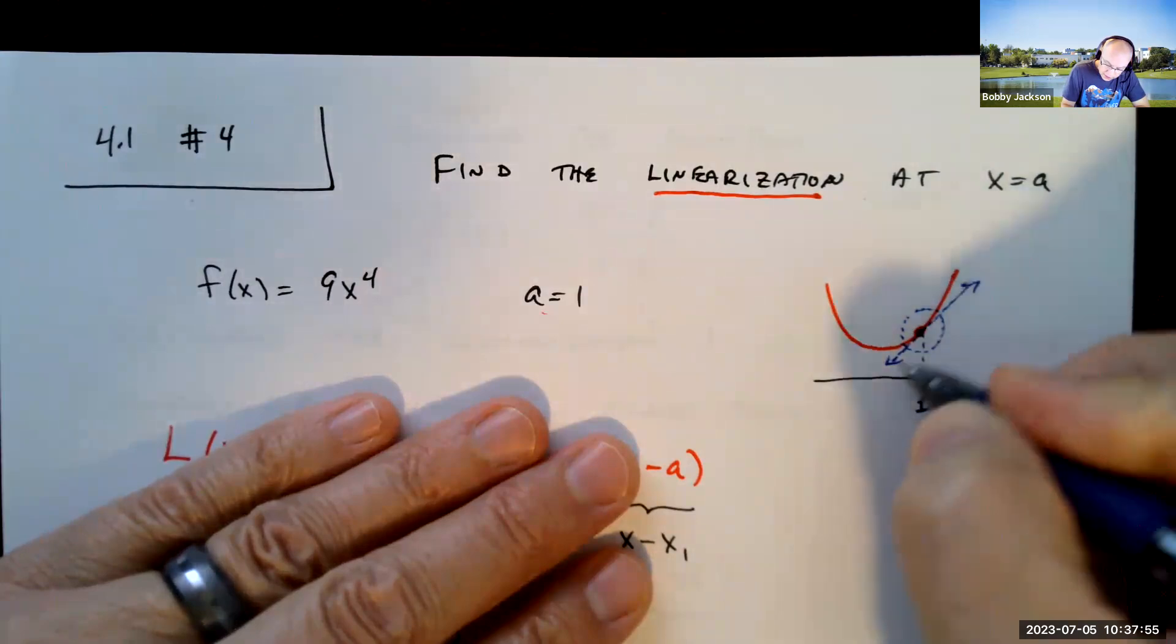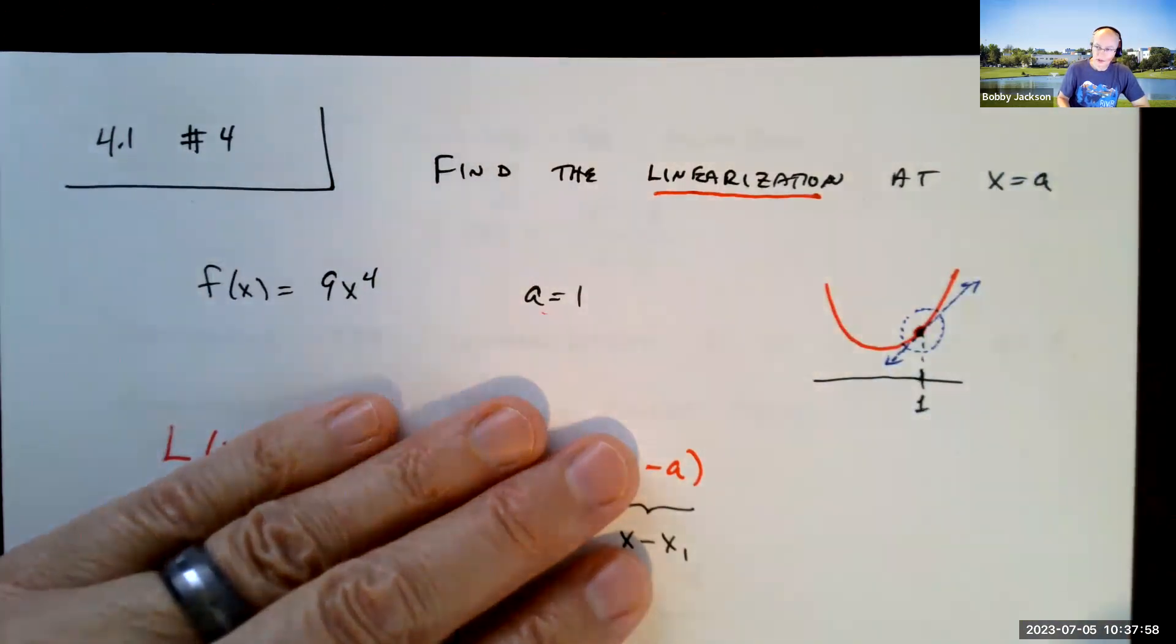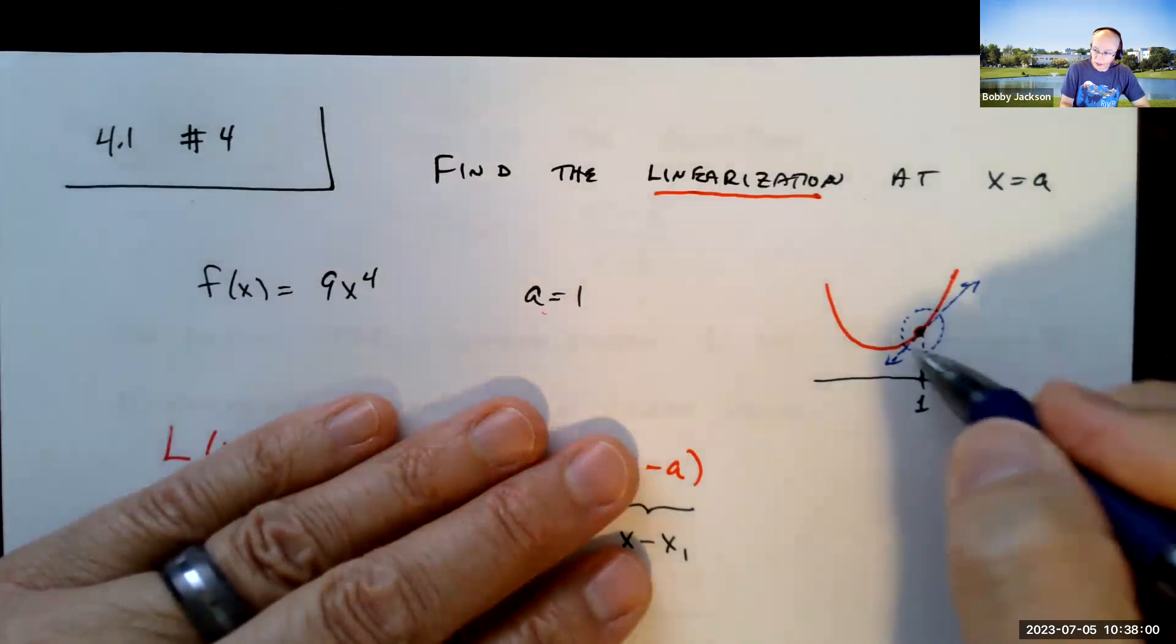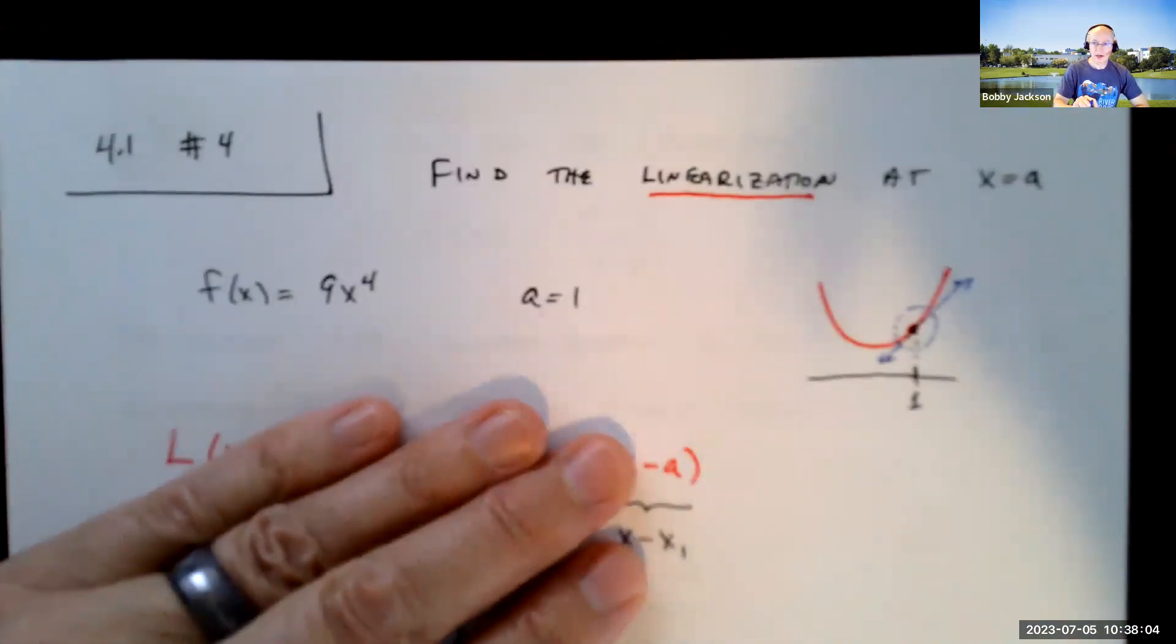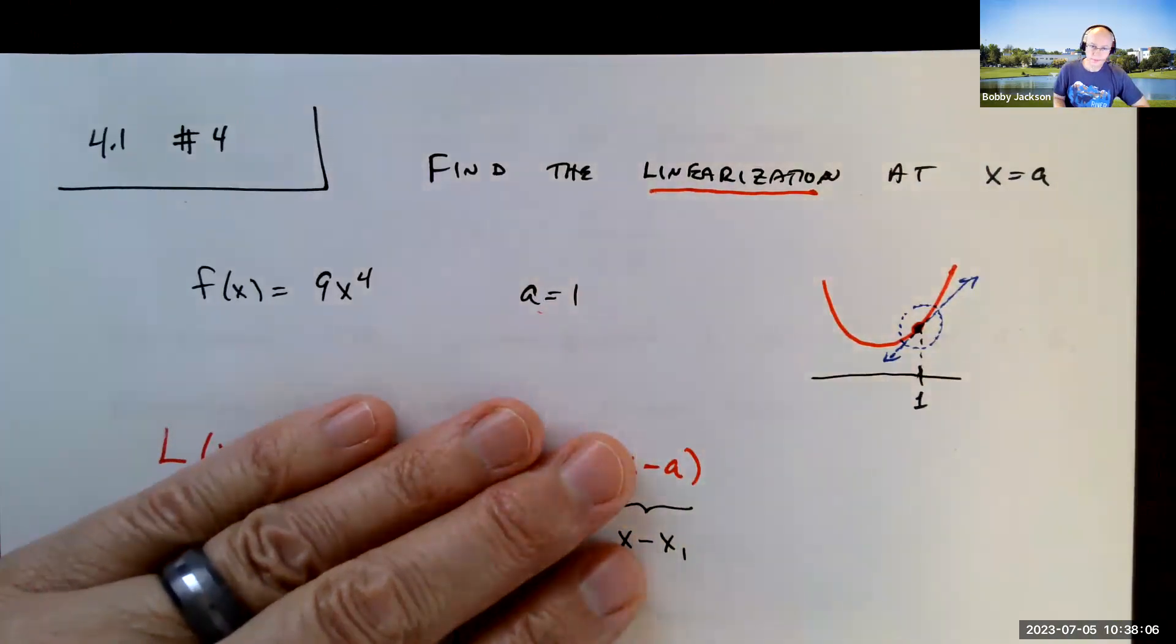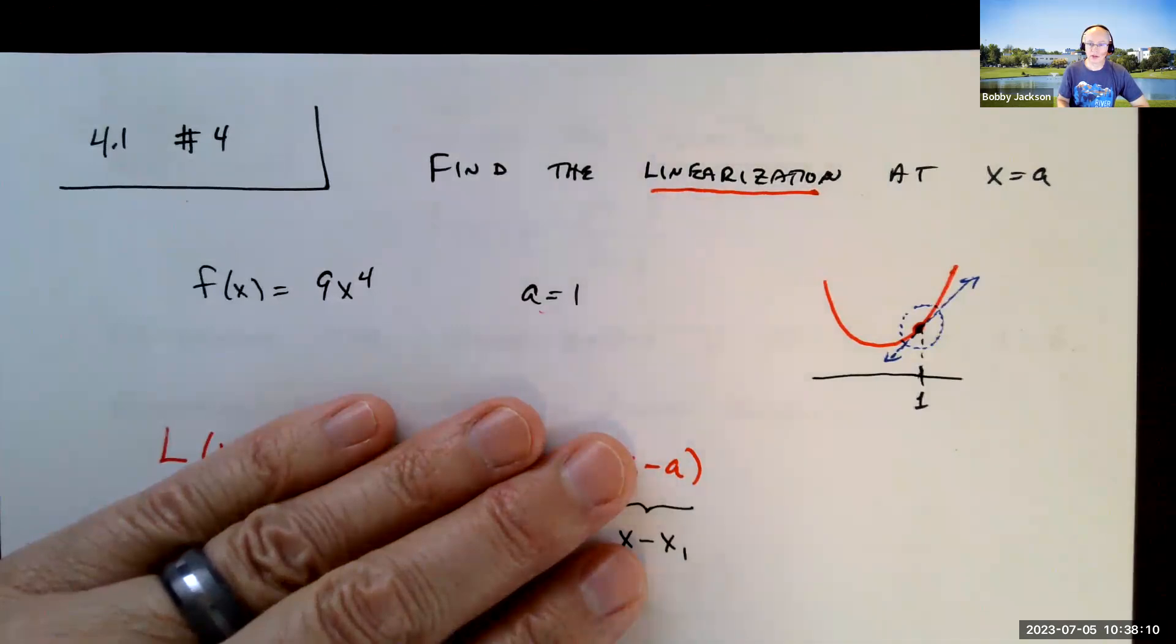Obviously, far away, they begin to diverge from each other, but we're using the linearization or the tangent line to approximate values of the function, and that's the power of linearization, what we call linearization.